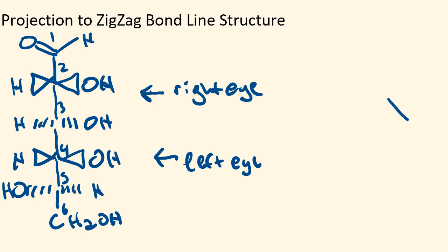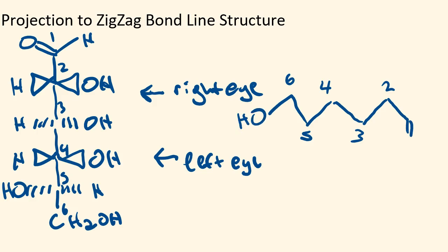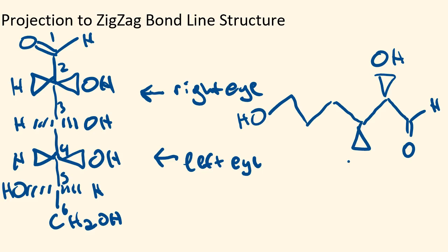Carbon two is at the top, three is at the bottom, four is at the top, five is at the bottom. Carbon six is not a chirality center, and carbon one has the aldehyde. On carbon two the hydroxyl is on a wedge, on carbon three the hydroxyl is on a wedge, on carbon four the hydroxyl is on a wedge, and on carbon five — since it's on the left-hand side of the molecule — it's on a dash. Stuff on a wedge is on the right-hand side of the modified Fischer projection; stuff on a dash is on the left-hand side.